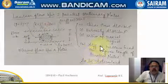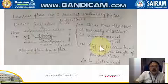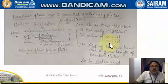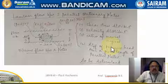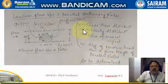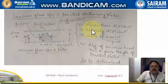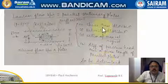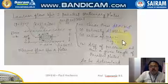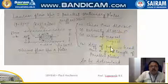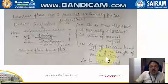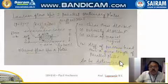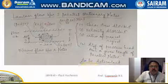As we have seen in laminar flow in a circular pipe, there we derived four equations to arrive at the Hagen-Poiseuille equation. The same four equations are to be determined here: shear stress distribution, velocity distribution, ratio of maximum velocity to average velocity, and the difference in pressure head over a given length of the parallel plates.